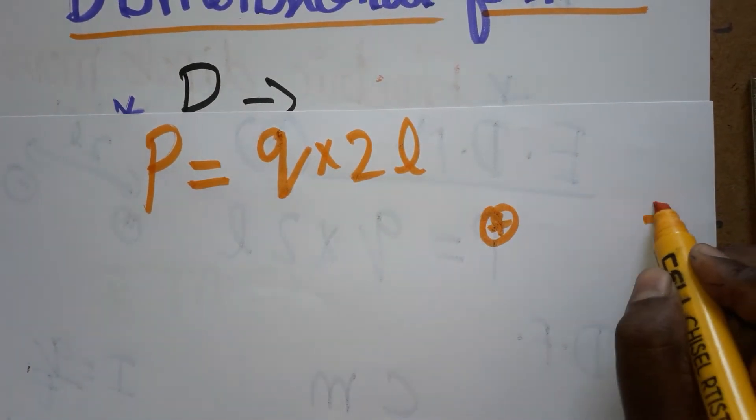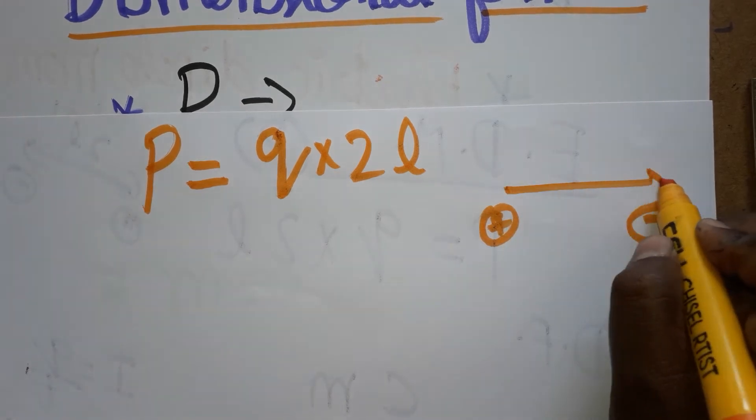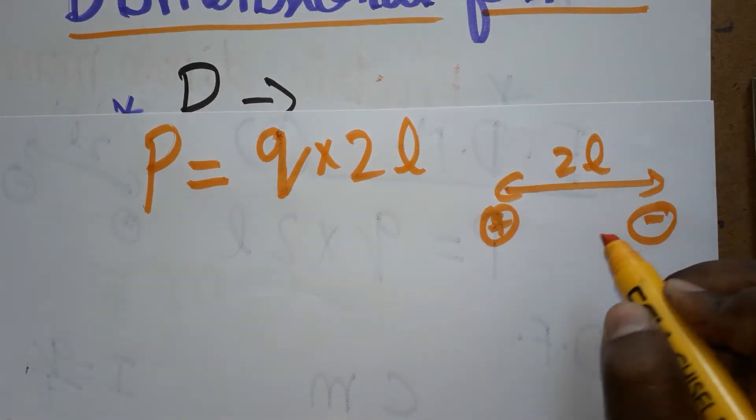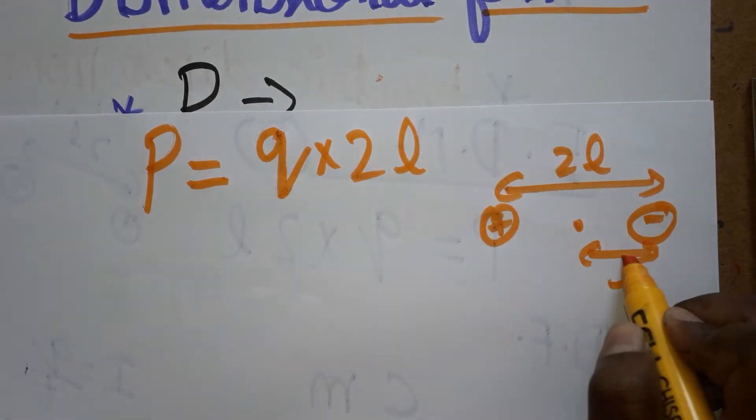a plus charge and a minus charge, HCl is also an example. So the distance between the two charges we can take as 2L. From center, we can take it as L.